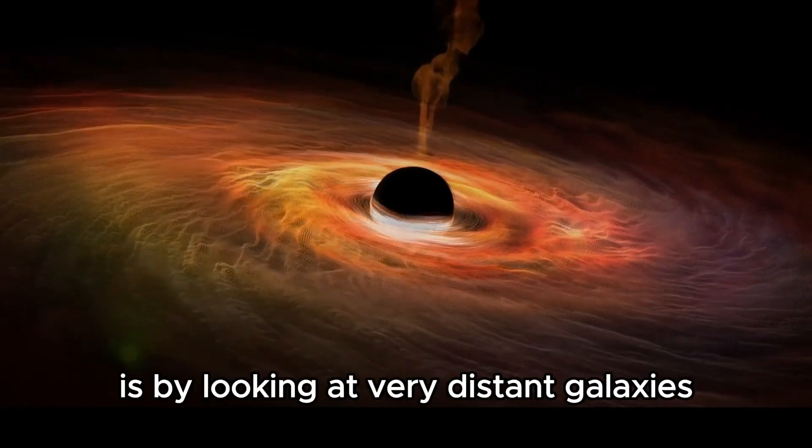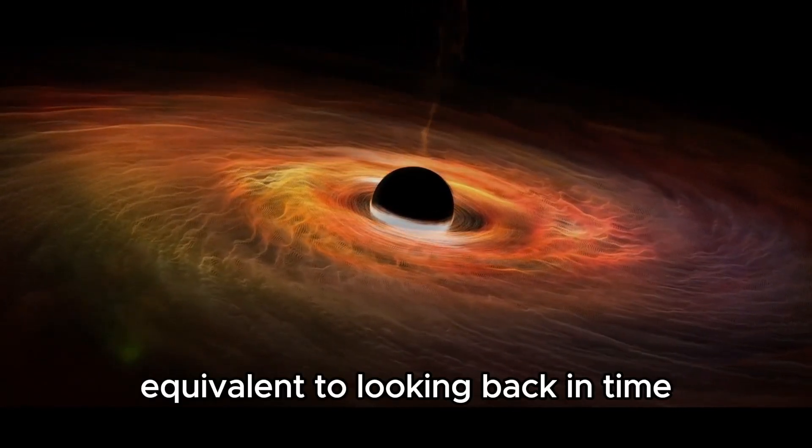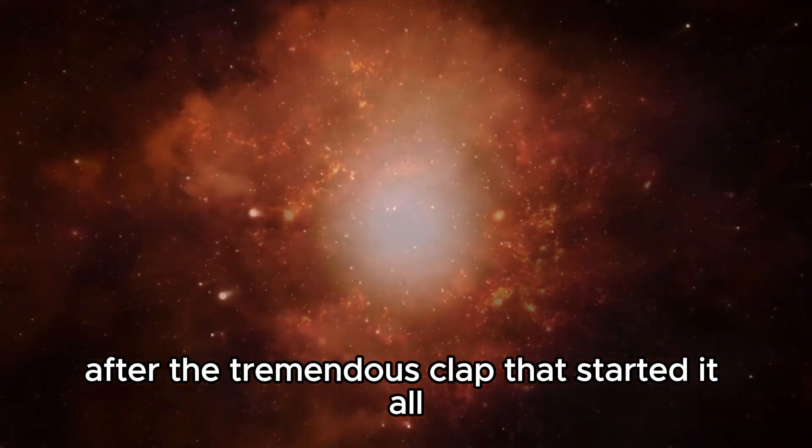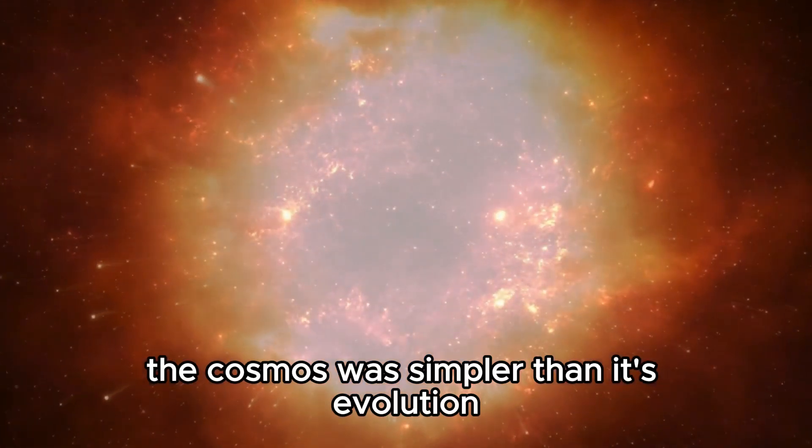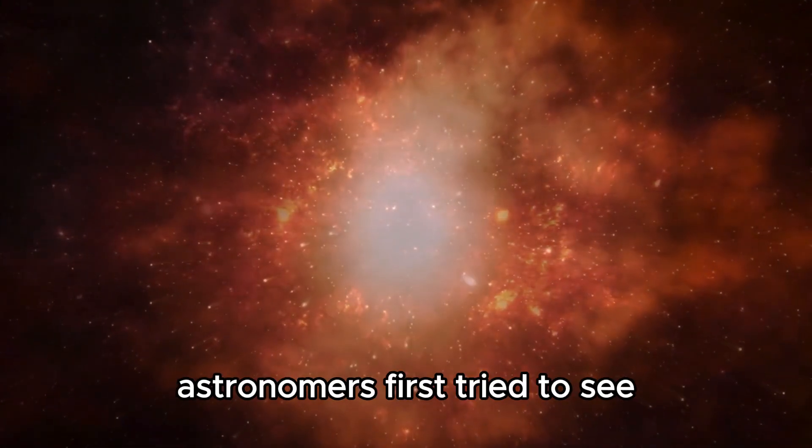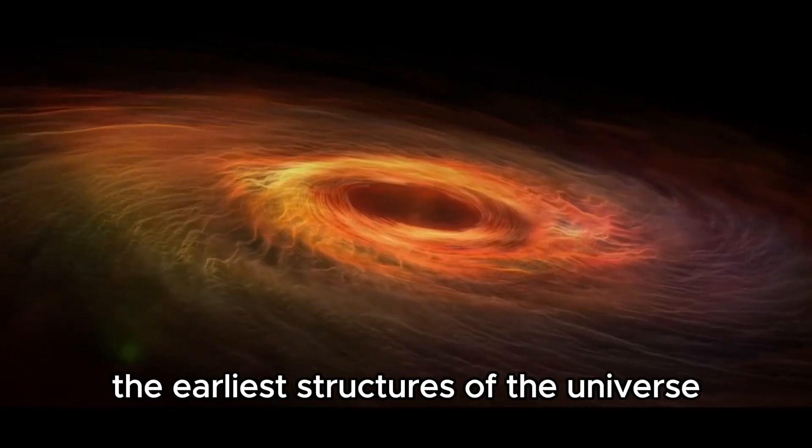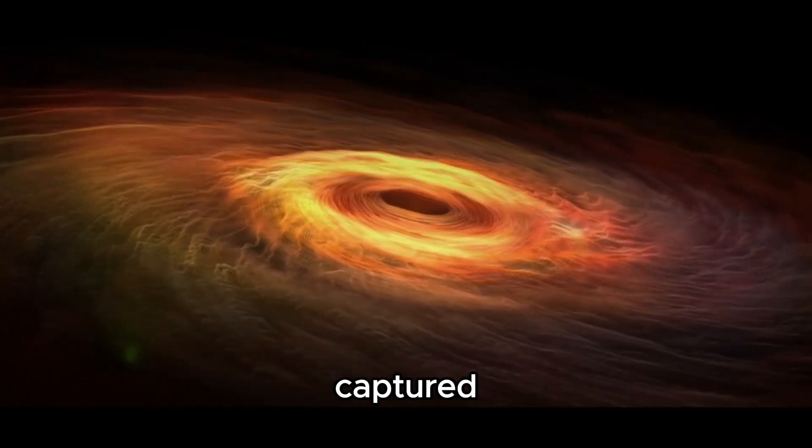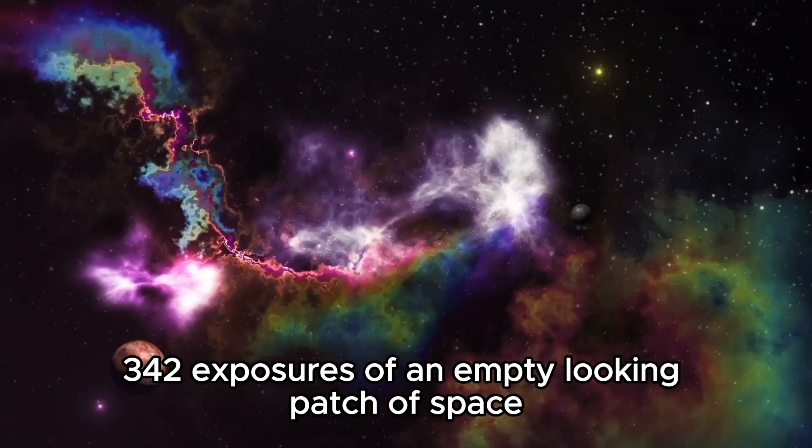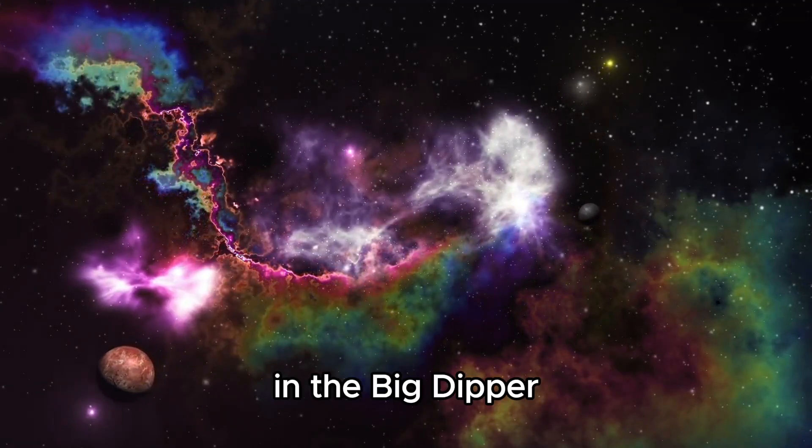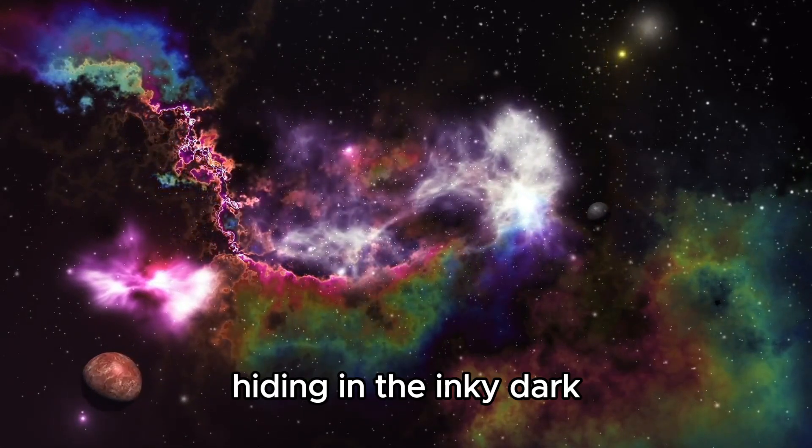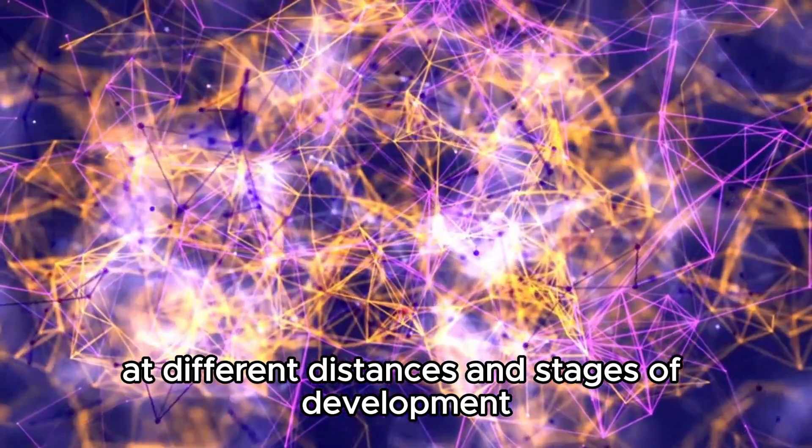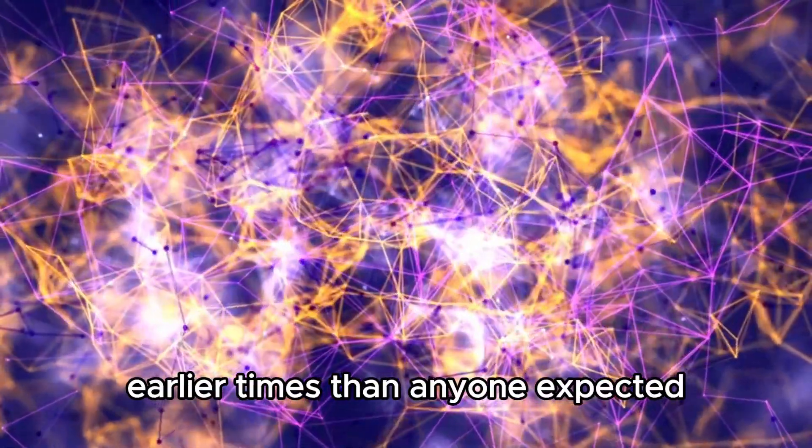One way to test this model is by looking at very distant galaxies, equivalent to looking back in time to the first few hundred million years after the tremendous clap that started it all. The cosmos was simpler then, its evolution easier to compare against predictions. Astronomers first tried to see the earliest structures of the universe using the Hubble Telescope in 1995. Over ten days, Hubble captured 342 exposures of an empty-looking patch of space in the Big Dipper. Astronomers were astonished by the abundance hiding in the inky dark. Hubble could see thousands of galaxies at different distances and stages of development, stretching back to much earlier times than anyone expected.